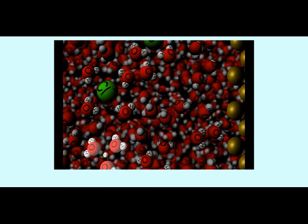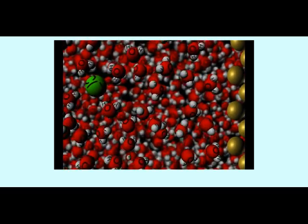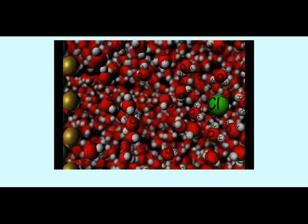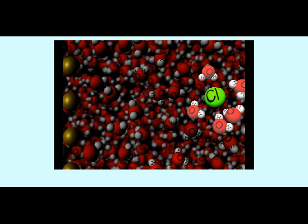Examine how the hydrogen ions migrate toward the negative electrode while the chloride ions migrate toward the positive electrode.